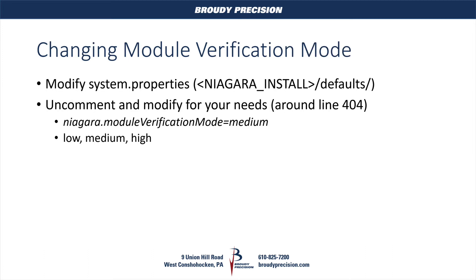To change the verification mode, go into your Niagara install directory in the defaults folder. There's a system.properties file, and inside that file there's a line called niagara.moduleverificationmode. By default it's commented out and takes the default built into the code — which is medium — but you can change it to low, medium, or high. That line is going to be around line 404, towards the bottom of the text file. We're going to take a look at that now, along with what modules not opening looks like and what the error messages look like in Niagara.